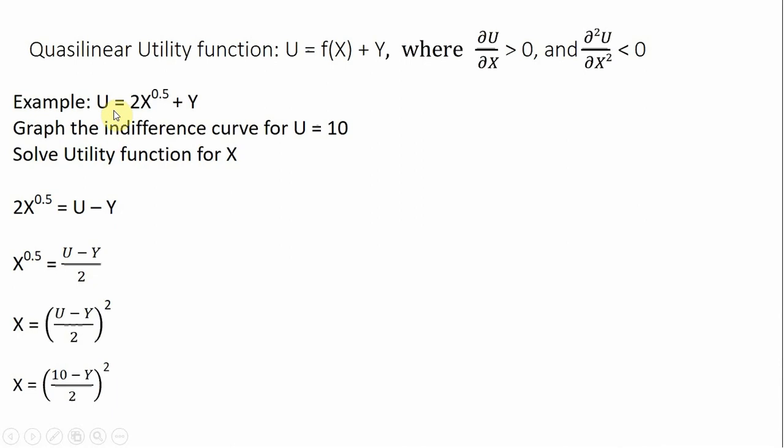So here is a specific functional form that takes on this quasi-linear utility function. So let's say we want to graph an indifference curve where utility equals 10.